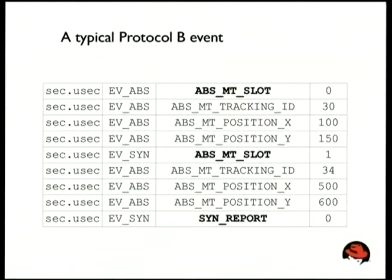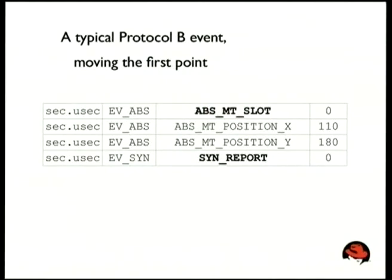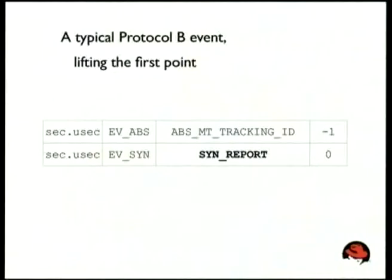Protocol B is slightly easier for user space to handle because it tracks touch points for you using the concept of slots. Depending on the hardware you can have 1, 2, 10, or 15 slots. In the same event stream, you get: slot zero has tracking ID 30 with position X and Y, and slot one has tracking ID 34 with the other position. The big thing about protocol B is that it is a stateful protocol — you have to remember what happened. If you move only the first touch point, you only get an update for slot zero; nothing for the second since it hasn't moved. If you lift the first point, you just get a tracking ID of minus one, meaning it has disappeared.